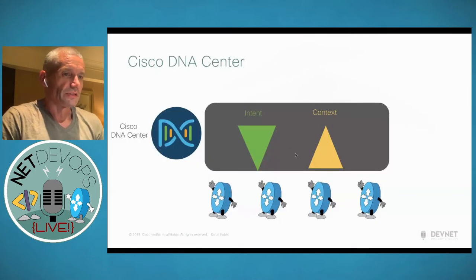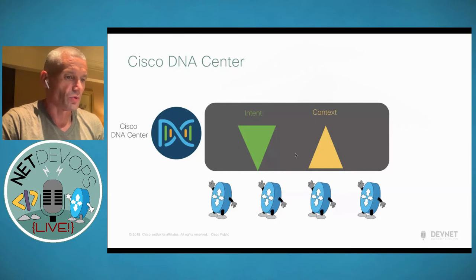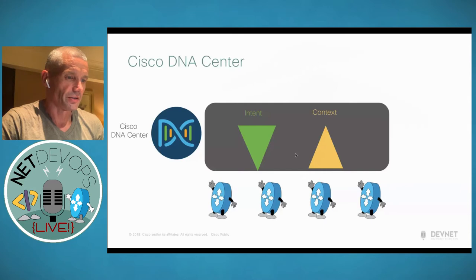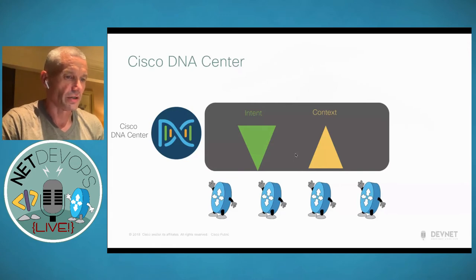Cisco DNA Center is our controller for the campus — it controls wired and wireless infrastructure and routers. The whole point was to abstract and simplify network interaction. Two main problems: how to make changes to the network through intent and policy, and how to understand what's going on — collecting telemetry around devices, users, and user experience to create insight into network performance.